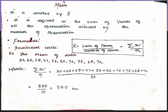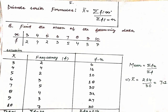Today we are going to discuss mean in a different format. If the question is given in terms of observations with frequency, how can you solve that? For the discrete series, the formula is: x̄ equals summation of fᵢxᵢ divided by summation of fᵢ. This is the formula for discrete series.